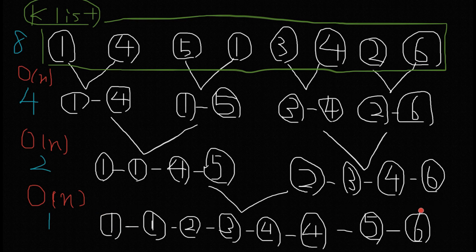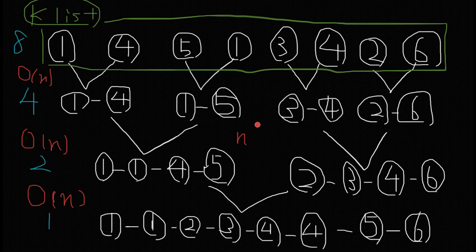Finally we get one list, and that's the basic idea to solve this question. For time complexity: every step we do a linear O(n) operation, but every operation we reduce the number of linked lists by half — from eight to four, four to two, two to one — so that's log K levels. Therefore the overall time complexity is O(n log K).